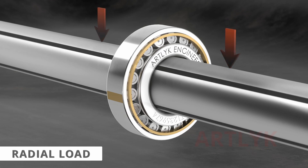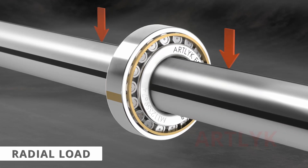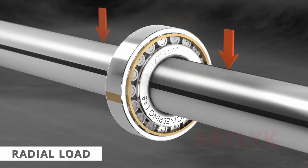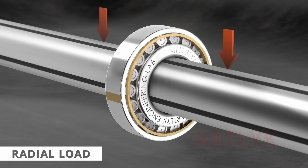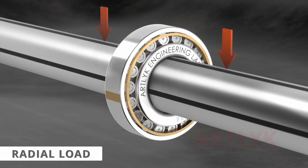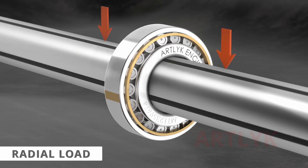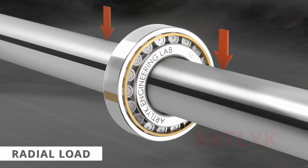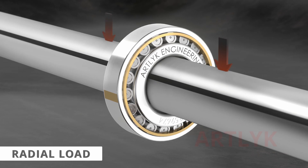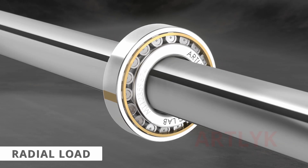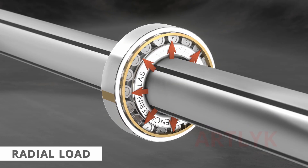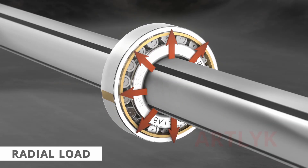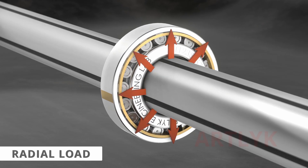Cylindrical roller bearings feature rollers that are longer than their diameter and can tolerate higher loads than ball bearings. They can carry heavy radial loads and can be used in high-speed applications. They provide high precision and low friction, enabling high rotational speeds while reducing noise, heat, and energy consumption.